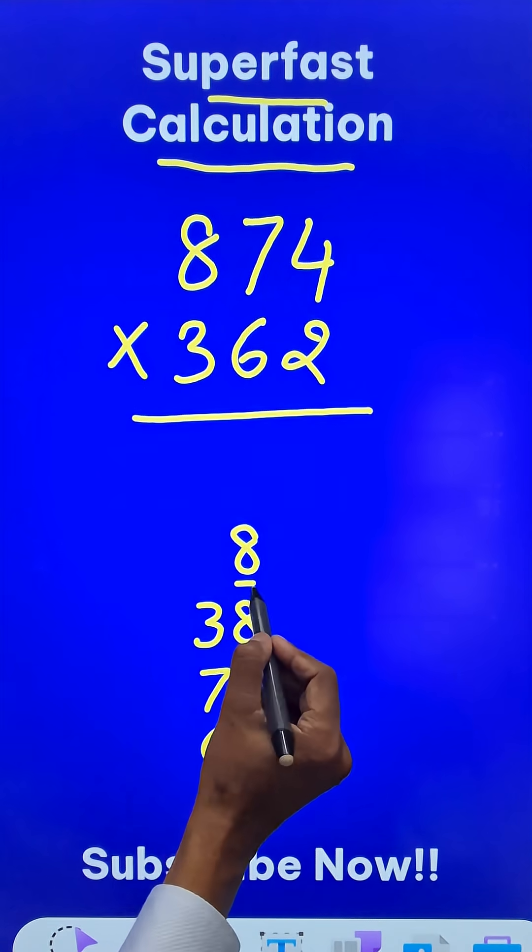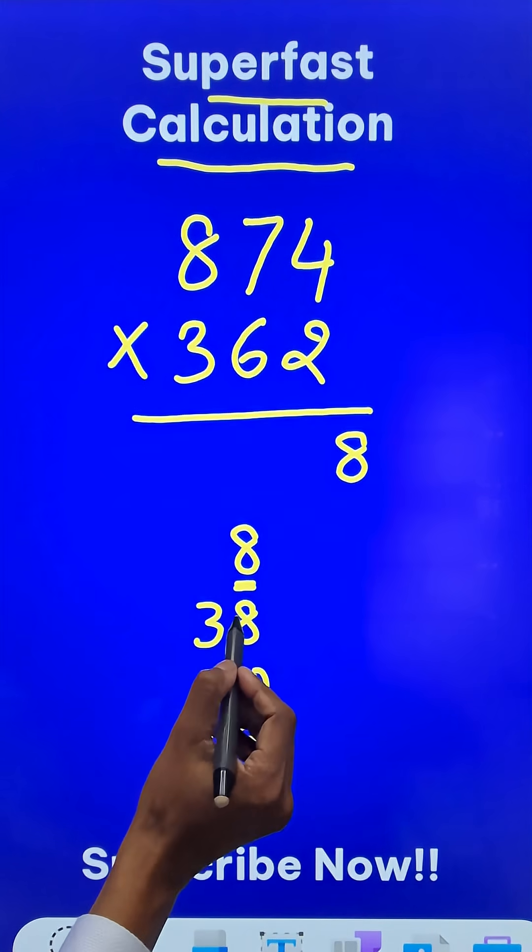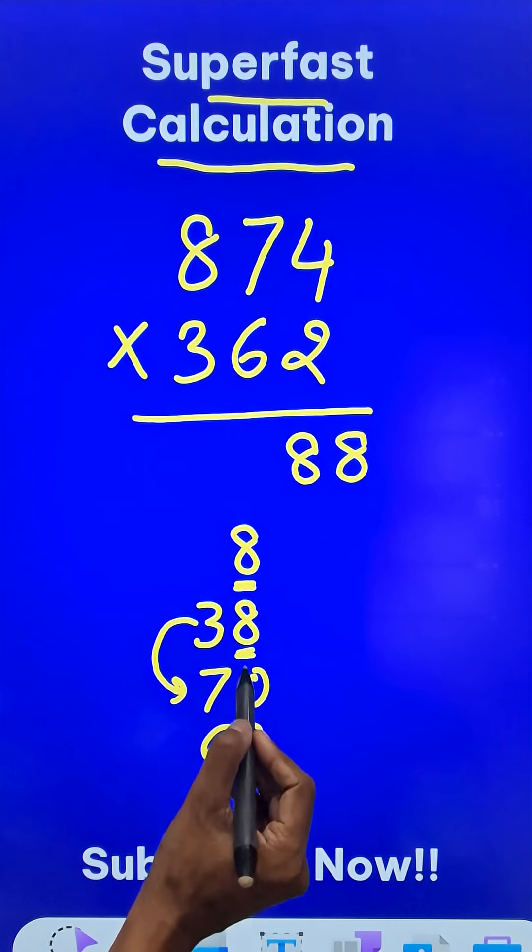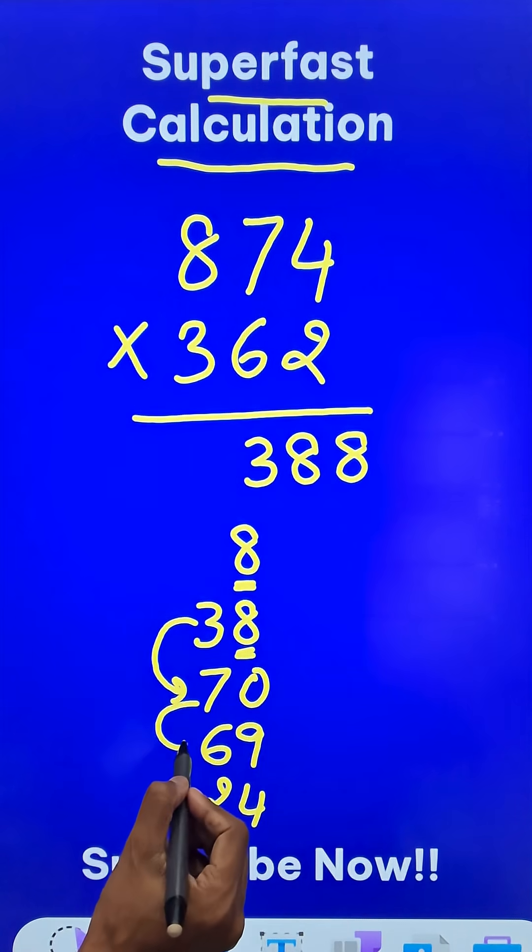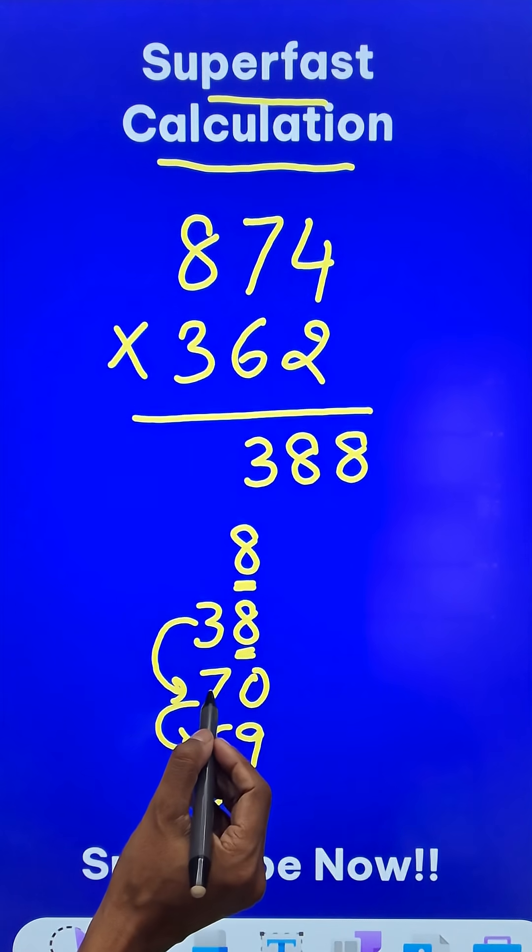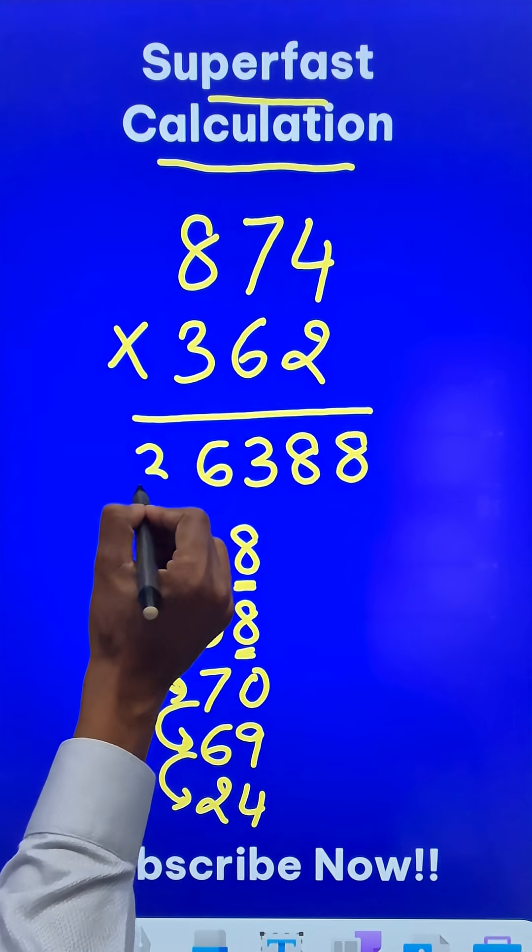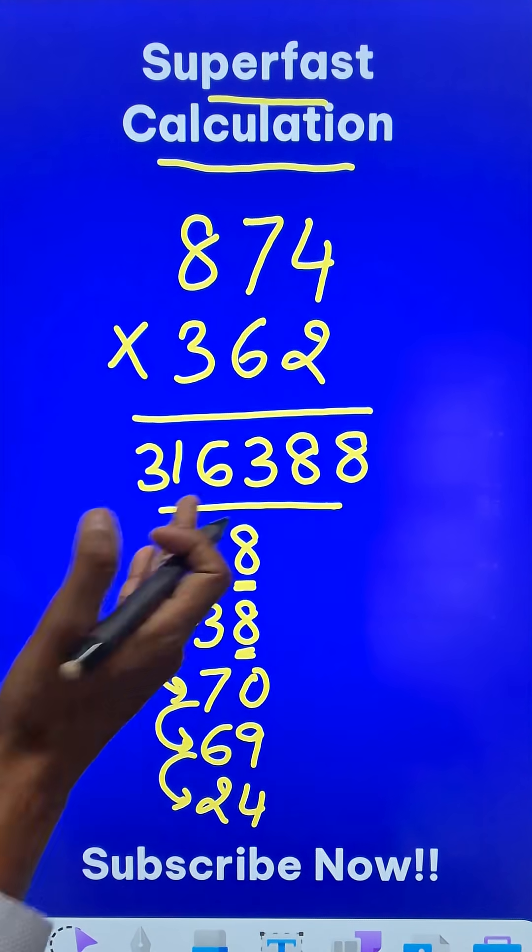Now what is the answer? Start from here: 8. Then 38 means 8 and 3. 3 added to 70 gives 73, so write 3 and carry 7. 69 plus 7 is 76, so write 6 and carry 7. 24 plus 7 is 31. Now pick up the calculator and check your answer.